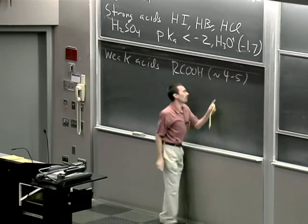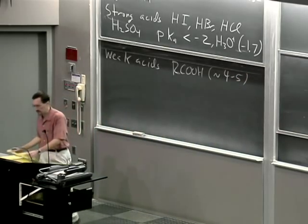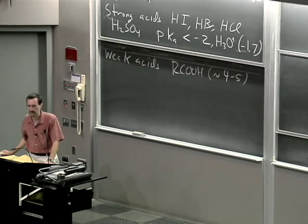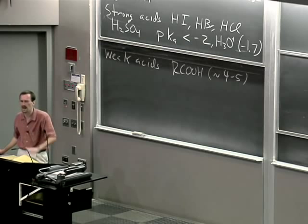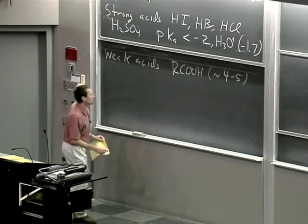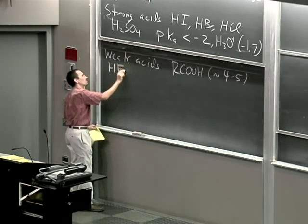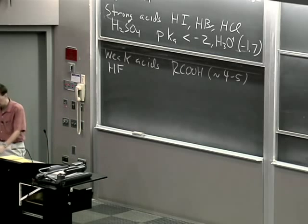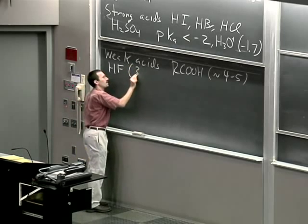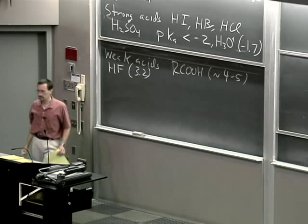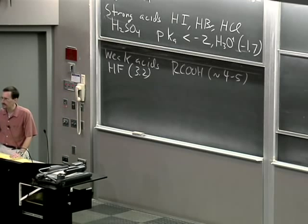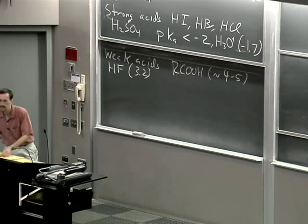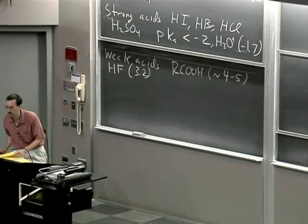You'll see me writing a tilde a lot to mean approximately. In general, a carboxylic acid like acetic acid would be somewhere between 4 and 5. In general chemistry, students are often surprised to learn that hydrofluoric acid is not a strong acid — it's a weak acid. Its pKa is 3.2. It doesn't dissociate a lot; it's not much stronger an acid than the acetic acid in your vinegar. It will burn you terribly for other — physiological — reasons, and hydrofluoric acid is one of the worst acids to work with.